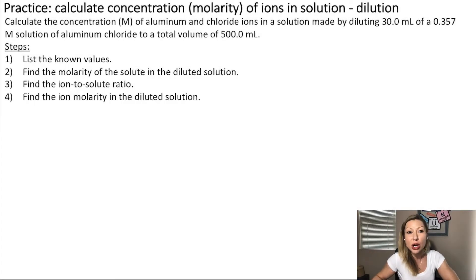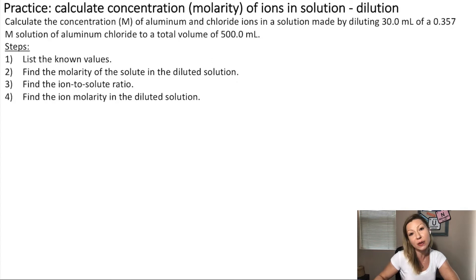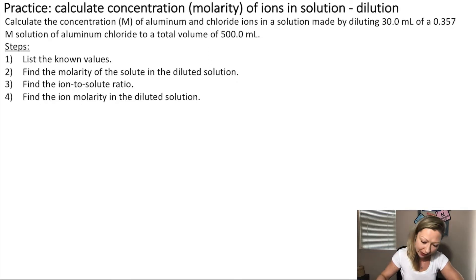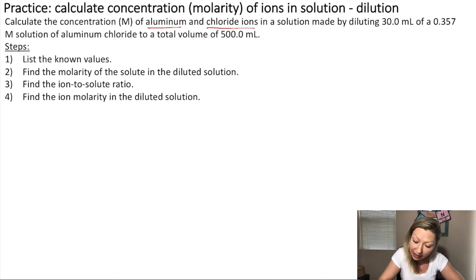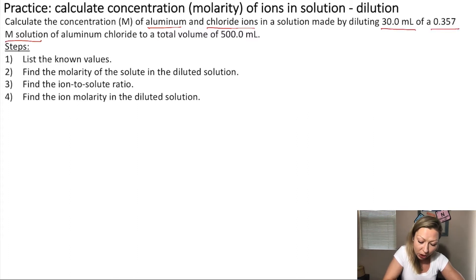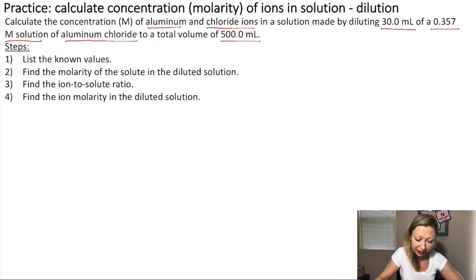Hello guys. In this video we are doing an example on how to calculate the concentration of ions in a solution during a dilution. Let's calculate the concentration of aluminum and chloride ions in a solution made by diluting 30 milliliters of 0.357 molar solution of aluminum chloride to a total volume of 500 milliliters.